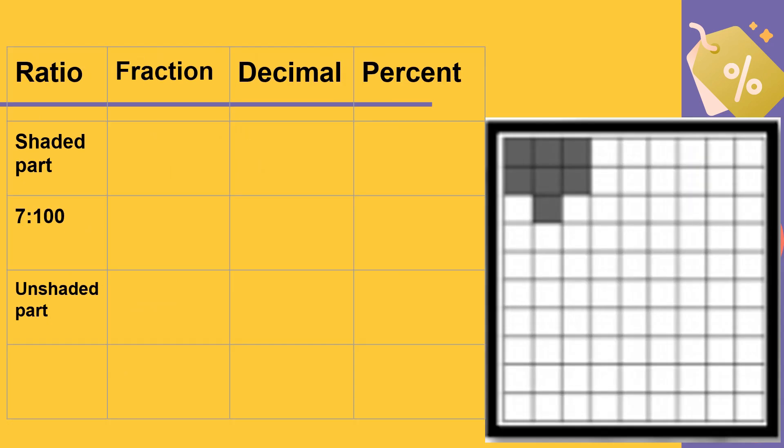If you are going to express this into ratio, fraction, decimal, and percent — the shaded part is 7 is to 100. When written as a fraction, it is 7 over 100. The ratio and fraction are the same, just written differently. 7 over 100 does not need to be reduced to lowest terms.